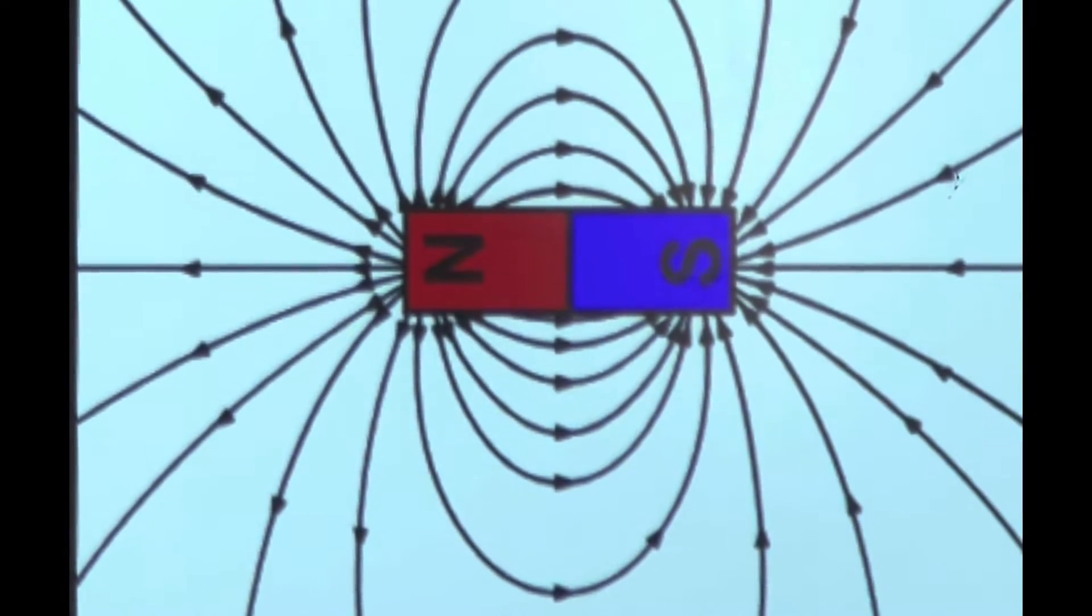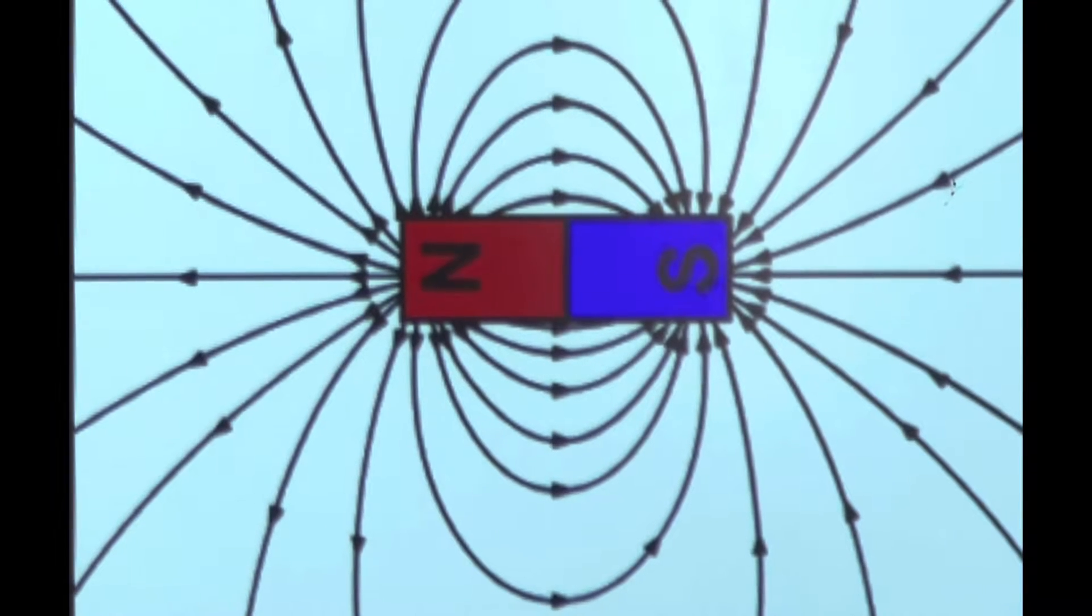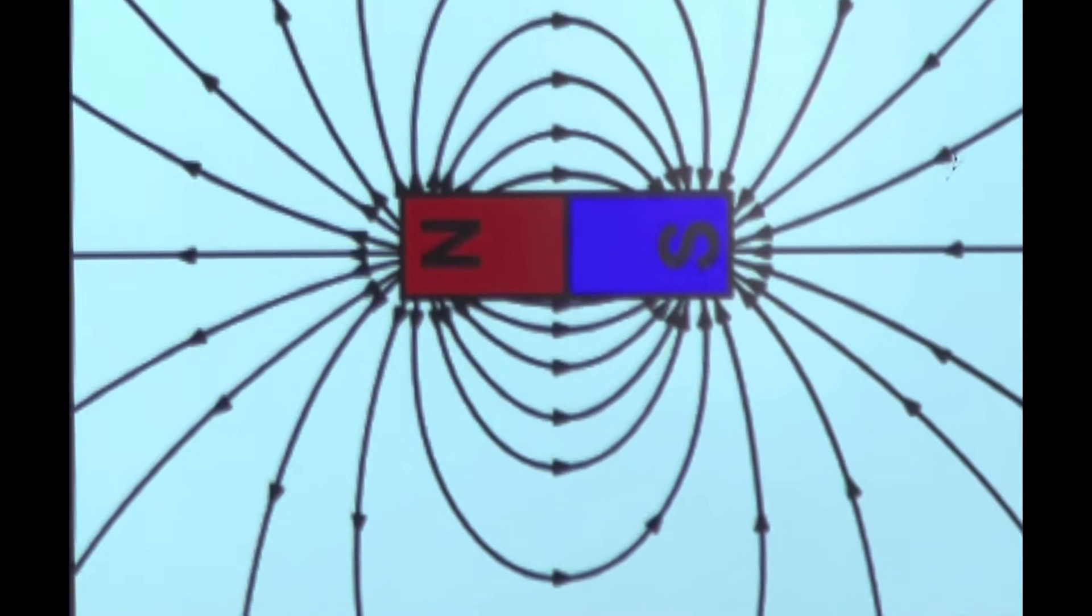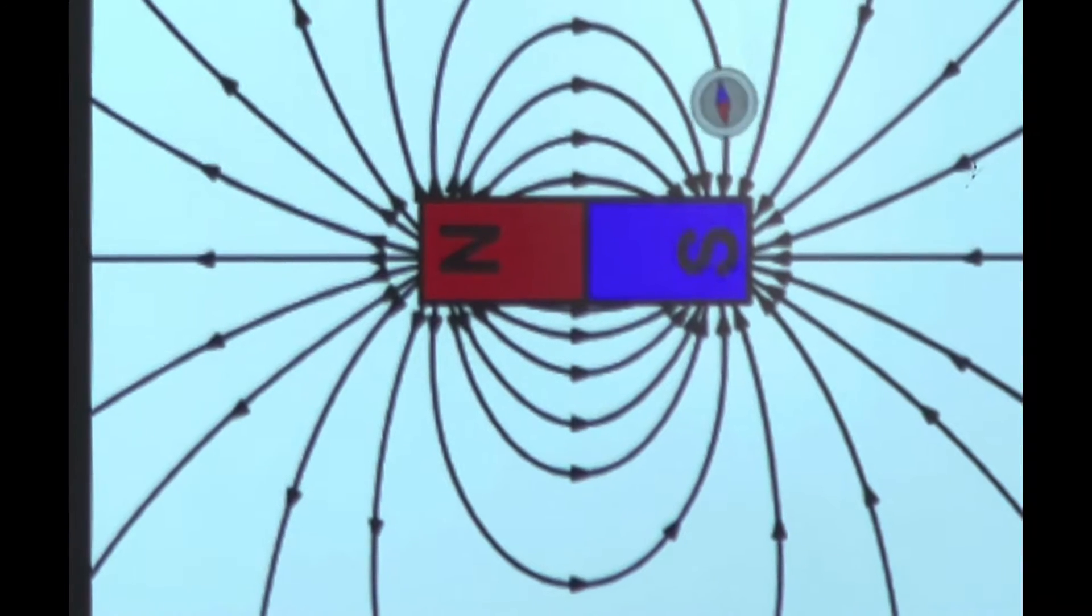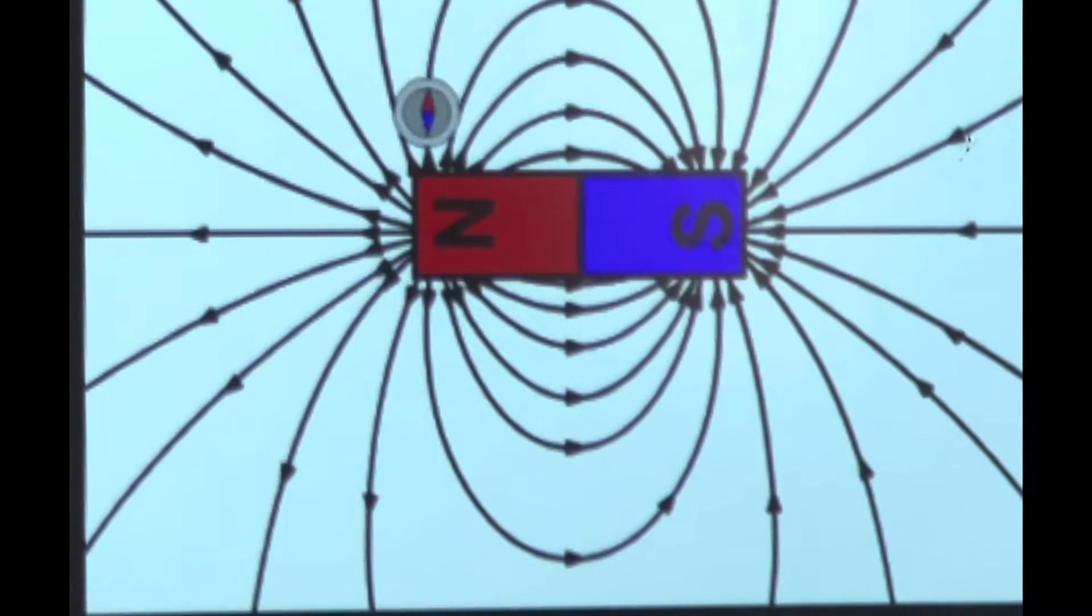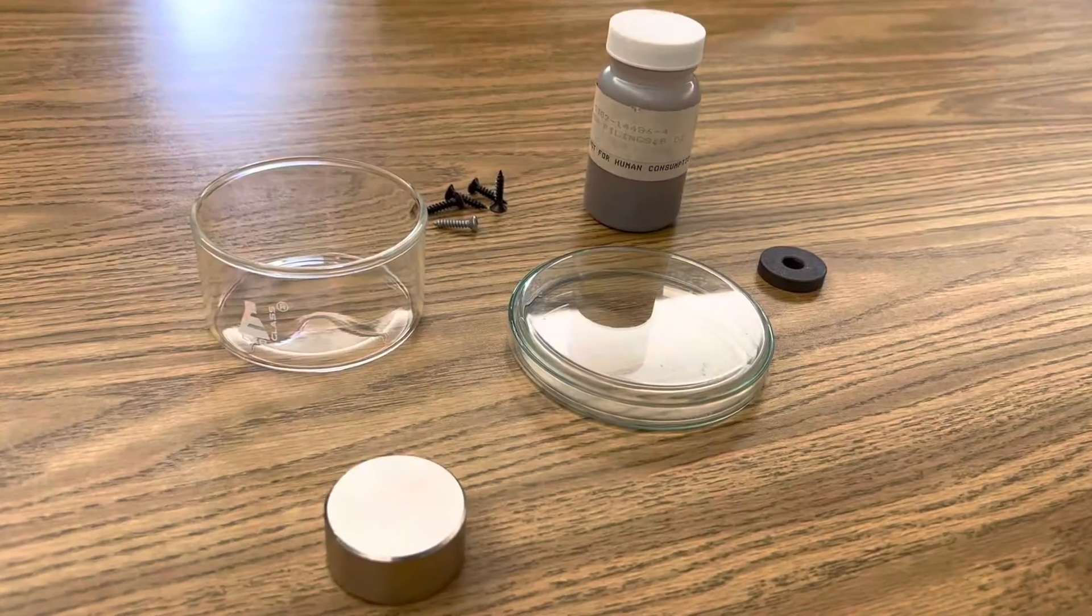Chances are you've seen demonstrations or applets like this one where it shows magnetic fields moving from the north to the south pole. These demonstrations allow students to use iron filings to show those same patterns right in front of them.